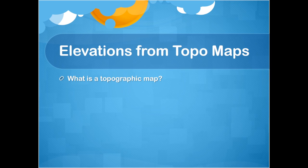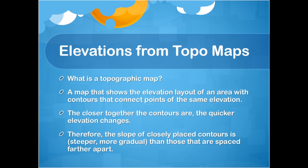We can use topographic maps to get elevations. Topographic maps, or topo maps for short, show the elevation layout of an area using contour lines that connect points of the same elevation. Contours that are close together indicate quick changes in elevation. Contours that are close together indicate a steep slope, while contours spaced farther apart indicate a more gradual slope.